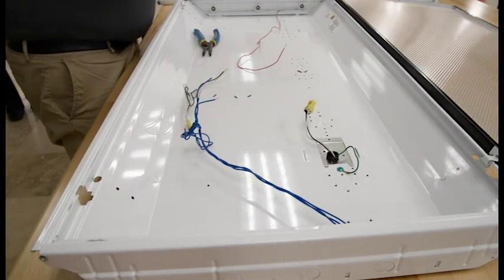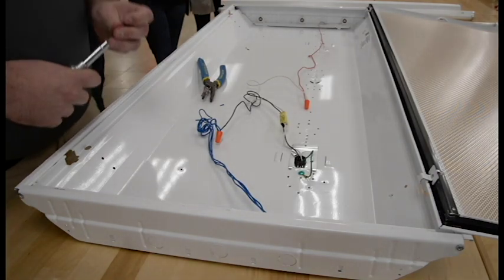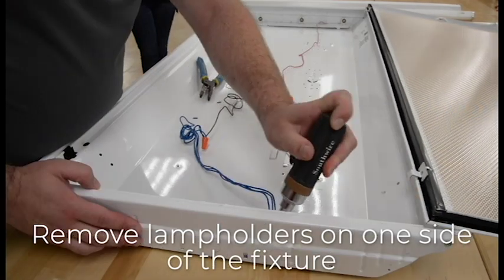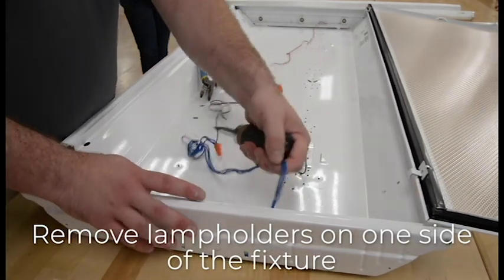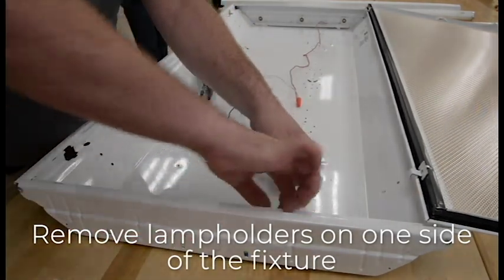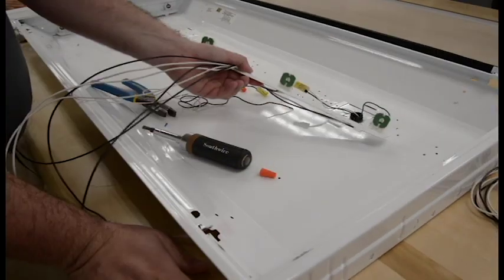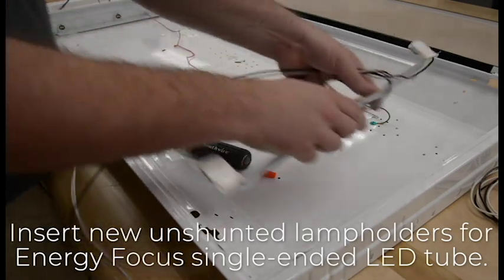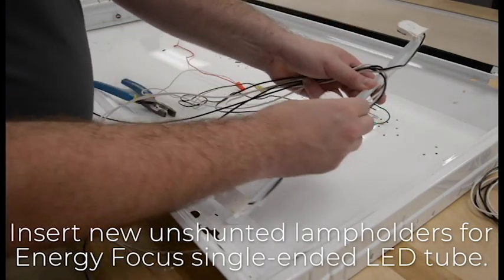To use a single-ended direct wire lamp, you will need to replace one set of shunted lamp holders with a set of unshunted lamp holders. Remove lamp holders on one side of the fixture, then replace the previously removed shunted lamp holders with new unshunted lamp holders from Energy Focus.